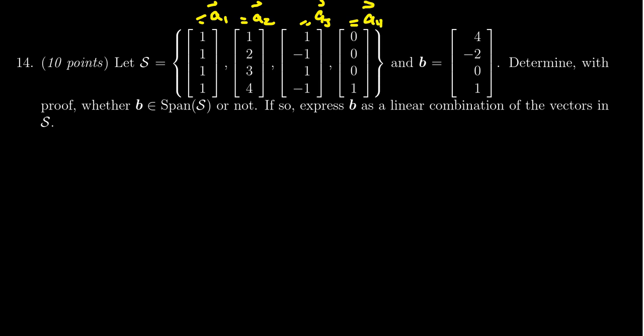So we have this set of vectors A1, A2, A3, A4, and we have another vector B. We are supposed to determine with proof whether B belongs to the span of the set S. That is, is B a linear combination of A1, A2, A3, A4?